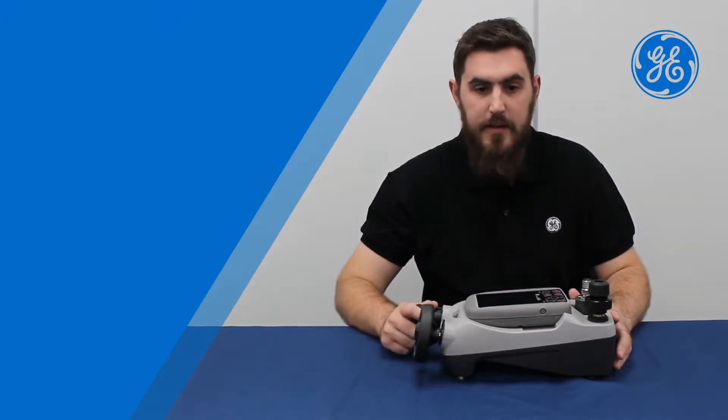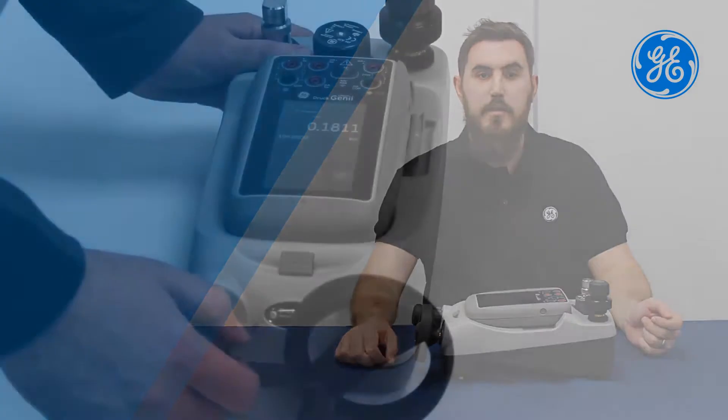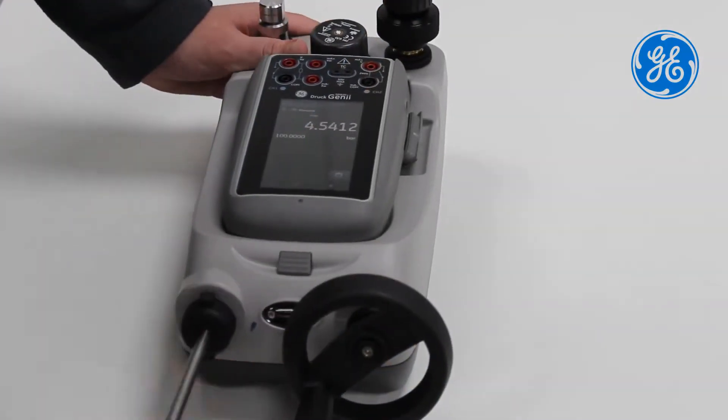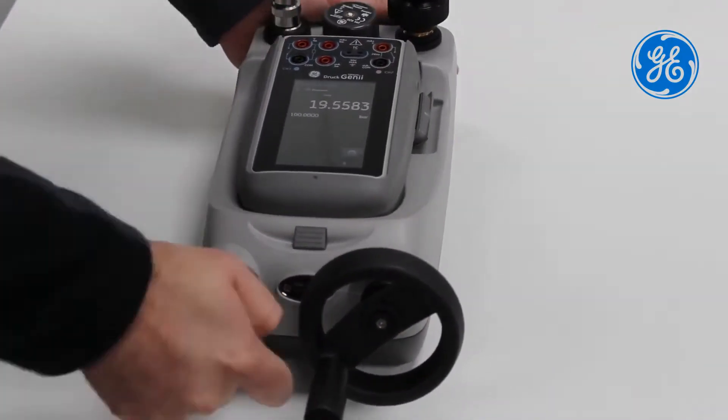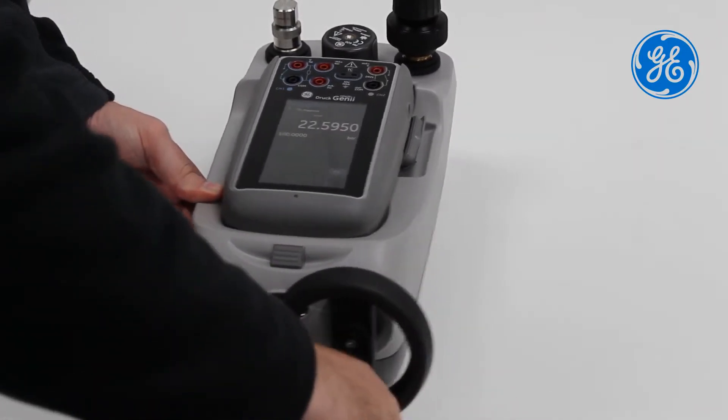Then I go ahead and start generating my pressure. I want to get up to 20-ish bar with the pump before going to the volume adjuster. And then using the volume adjuster, I go all the way clockwise up to 100 bar.